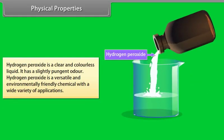Physical properties: Hydrogen peroxide is a clear and colorless liquid. It has a slightly pungent odor. Hydrogen peroxide is a versatile and environmentally friendly chemical with a wide variety of applications.